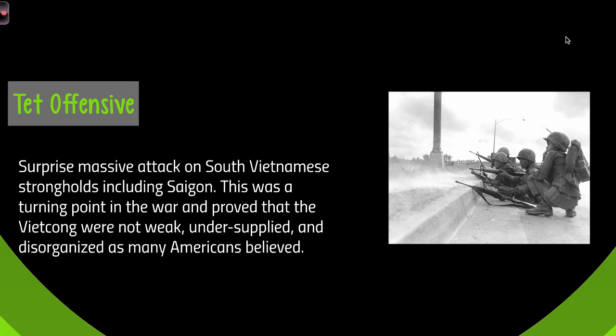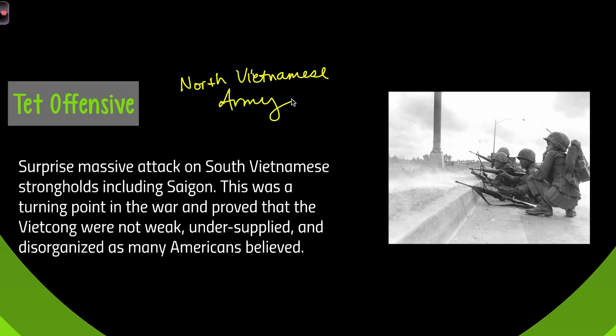The turning point in the Vietnam War is going to be the Tet Offensive, started by the Viet Cong, or the North Vietnamese Army. They launched a surprise attack on most of the South Vietnamese strongholds, including the capital city of Saigon. This is a turning point because we had always thought the Viet Cong were disorganized rebels who committed guerrilla warfare. The Tet Offensive showed us we were wrong — they very much knew what they were doing and were not as disorganized as we believed.